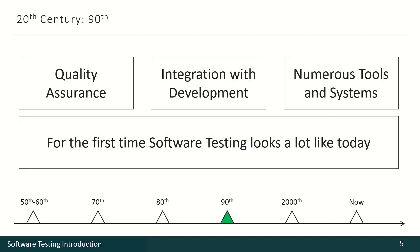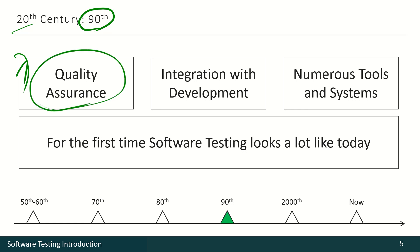At the end of the 20th century, software testing evolved rapidly and the idea of quality assurance came to life. Since then, quality was not only about fixing bugs or analyzing the current situation, but also about influencing plans to make the process of software development and other related processes more effective and efficient. Of course, that led to further integration between software testing and software development.